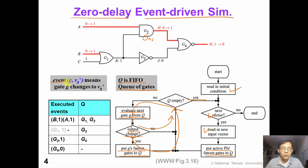In this lecture, we will use this notation to denote an event: G comma VG plus, which means an event where the gate output G is changing to VG plus. At the beginning, we have two events at primary input where A is rising to 1 and B is also rising to 1. So we put their fan-out gates G1 and G2 into the queue.